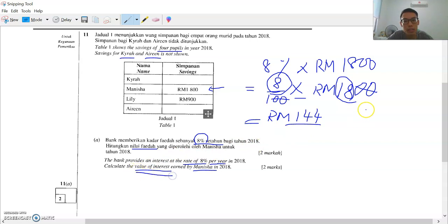This is the answer. The question asked for value of interest. You don't have to plus the saving. No need to plus anymore because the question only asks for the interest, how much interest is earned. If the question asks how much she will get at the end of the year, then yes you have to plus the savings. But if the question only asks for interest, cari faedah sahaja, RM144.